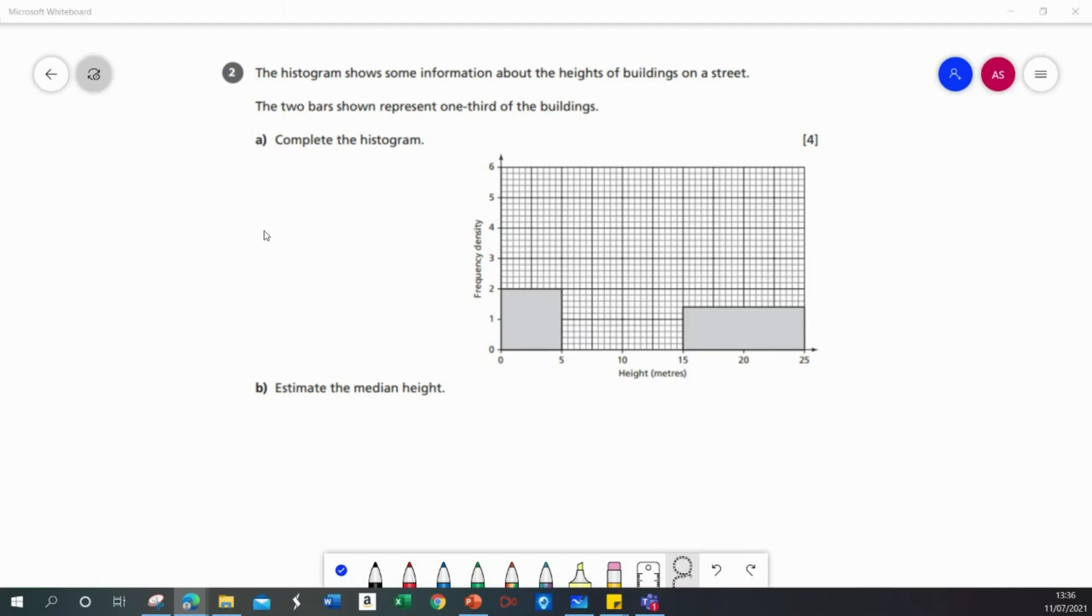In this question we have a histogram showing information about the heights of buildings on a street. The two bars shown represent one-third of the buildings and we need to complete the histogram.